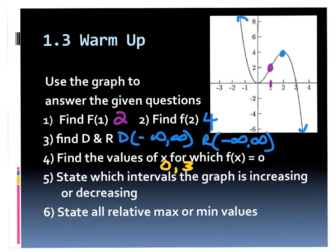The other way around, I would probably take off points. So if it said what are the x-intercepts, I want it in point format, and if you just gave me a list, I would probably take off points. But if you give too much information, I'm less inclined to take points off than if you don't give enough.